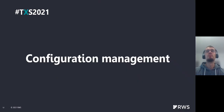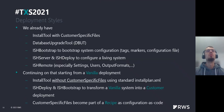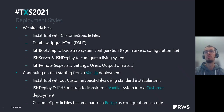Let's take a look at how we use all these tools in our TridionDocs automation process. We have the install tool which can apply customer-specific files and configure the base system with default settings. We have the database upgrade tool for working with and upgrading the database. We have ISHBootstrap to bootstrap system configuration, set roles, manage the configuration file, and execute recipes. And ISHServer and ISHDeploy to configure the living system and apply user-specific or default TridionDocs settings.